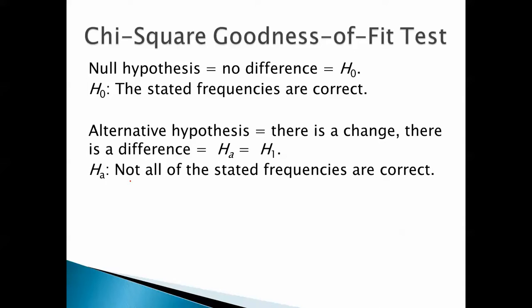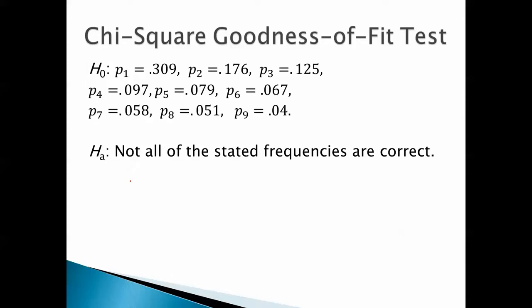Now, notice we say that not all of the stated frequencies are correct. That's not the same thing as saying they're all wrong. Some of them might be right, but at least not all of them are correct. Here's our null hypothesis. This is the proportion of first digits that are 1, this is the proportion of first digits that are 2, etc. The alternative is that not all of the stated frequencies are correct.